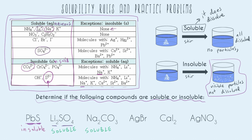Next I have silver bromide. I don't see silver on the left-hand side, but I do see bromide — and it looks like it's going to be soluble. But there's an exception: when bromide is paired with silver, it's insoluble. So even though bromide generally wants to be soluble, silver is an exception, making silver bromide insoluble.